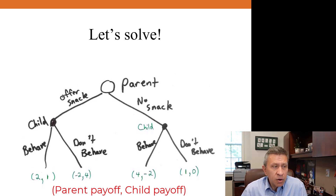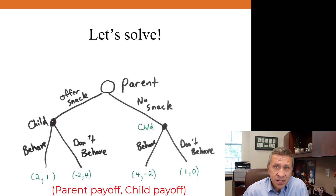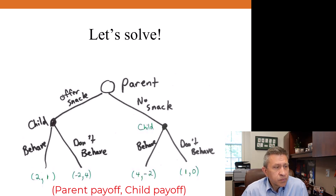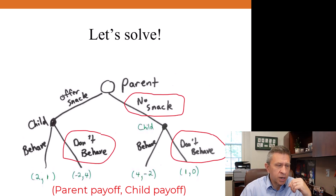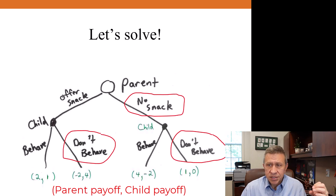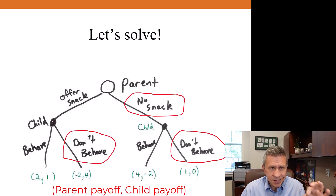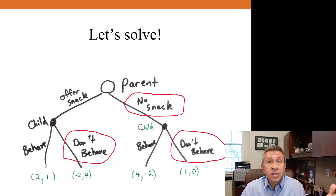In both sub-games, the parent would know that for each possible choice — offering a snack or not — the child is going to not behave. The parent can then use that information to realize they could get a payoff of negative two or a payoff of one. The sub-game perfect Nash equilibrium is that the parent does not offer a snack, and the child does not behave — with a payout of one for the parent and zero for the child.